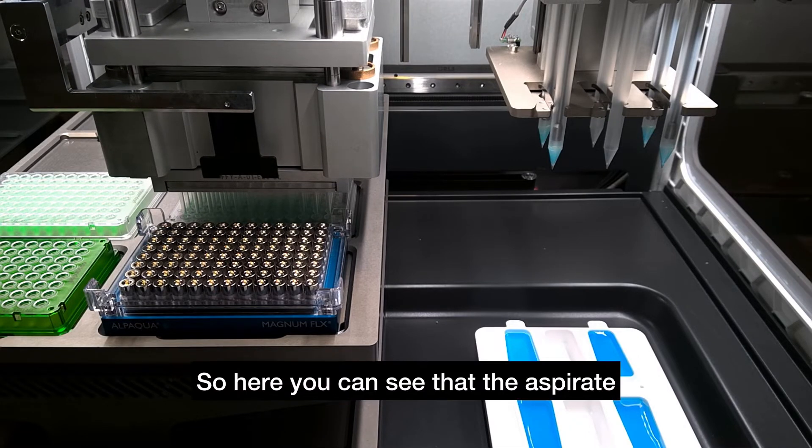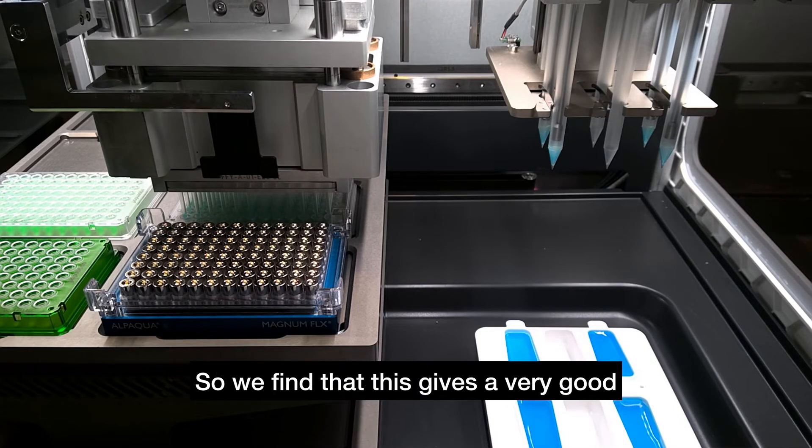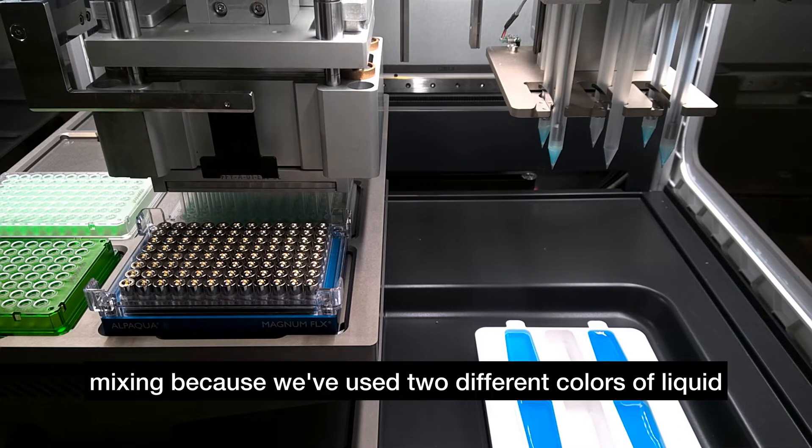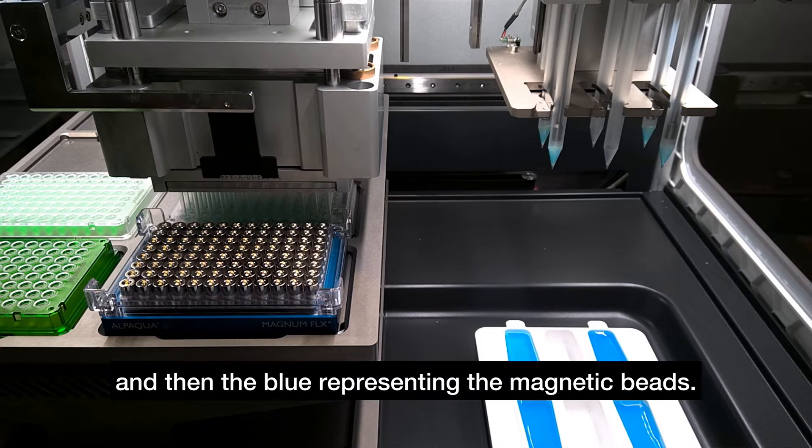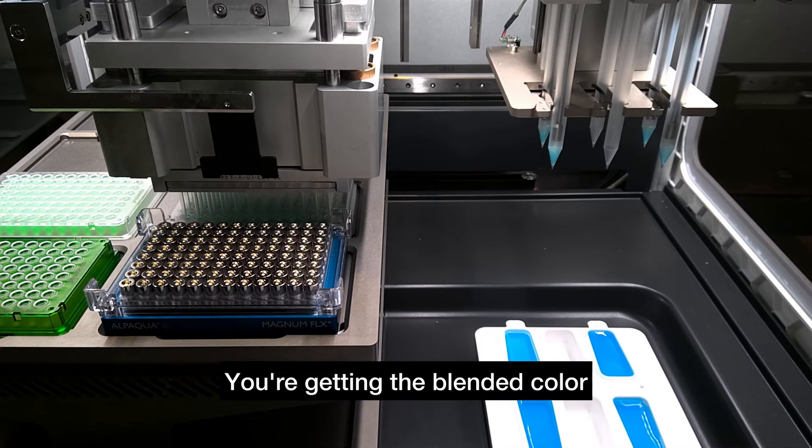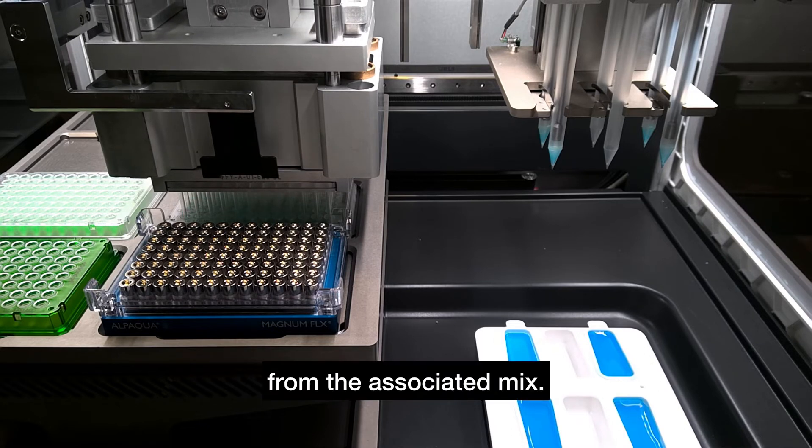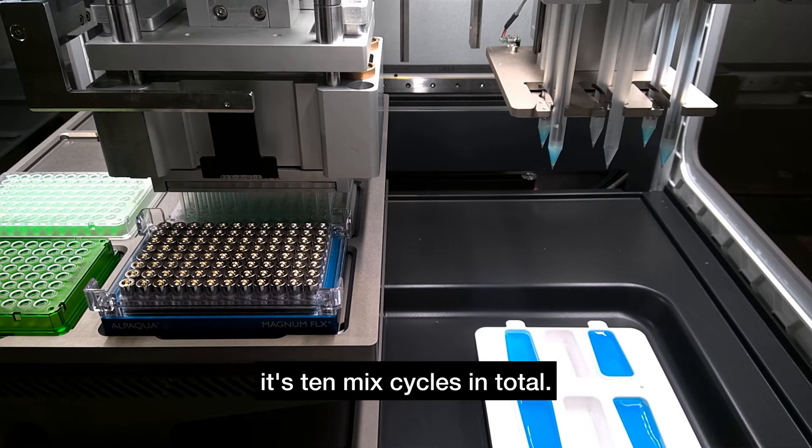So here you can see that the aspirate is low and the dispense is high. So we find that this gives a very good mixing because we've used two different colors of liquid here, starting with the green to represent the samples and then the blue representing the magnetic beads. You're getting the blended color from the associated mix. So it's just going to go through, I think it's 10 mix cycles in total.